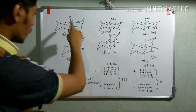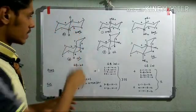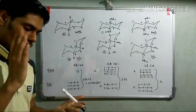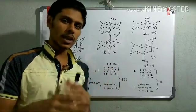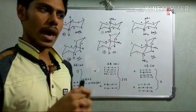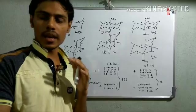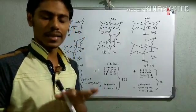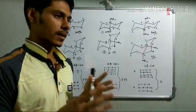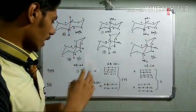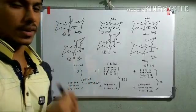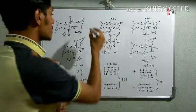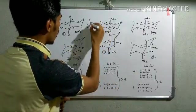For normal cis and trans decaline, whenever we compare the stability of bicyclic ring systems we have to check either the 1,3-diaxial interaction or the gauche-butane interaction - both are basically the same thing, just different names for the same event. I will explain this on the basis of gauche-butane interaction. So what is meant by gauche-butane interaction?